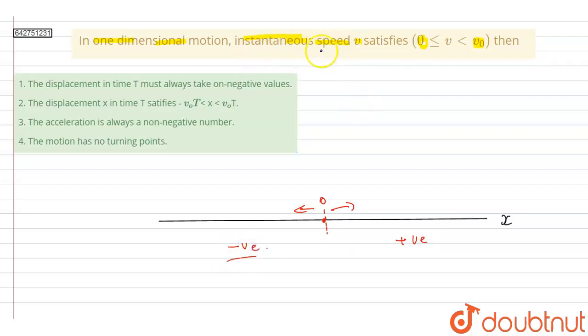In the question we are given that the instantaneous speed. So this means that v, as it is instantaneous speed, it will be equal to dx by dt. This ranges from v0, the maximum value it can achieve will be less than v0 and this will be less than or equal to 0. So from 0 to v0 the instantaneous speed will vary.